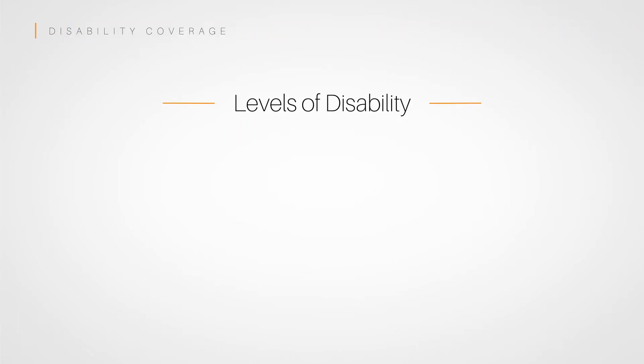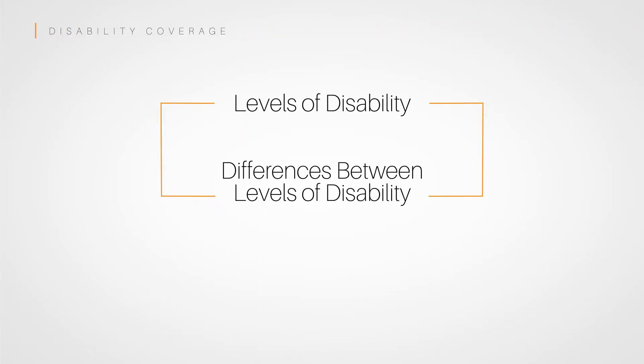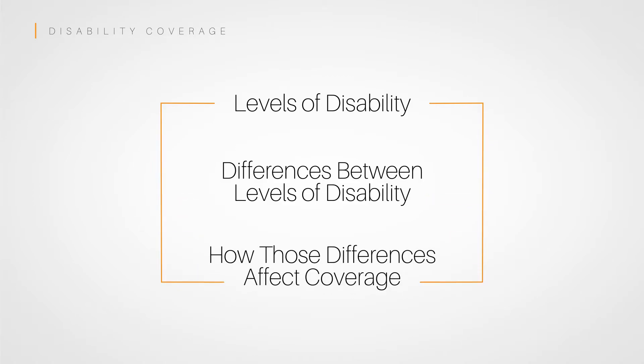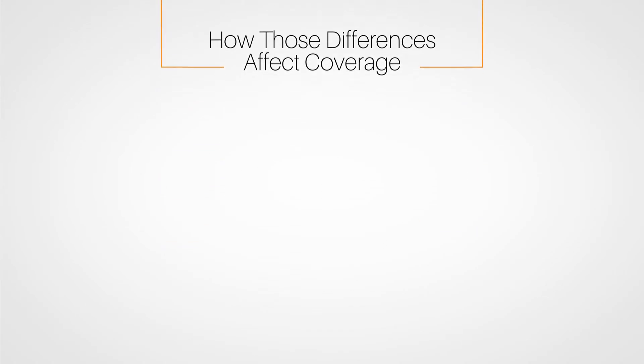Now we're going to detail the different levels of disability and the differences between them and how they affect coverage payable under the contract. Depending on the policy, benefits may be available that can pay for partial disabilities, which occur when a person can perform some, but not all, of their job duties.